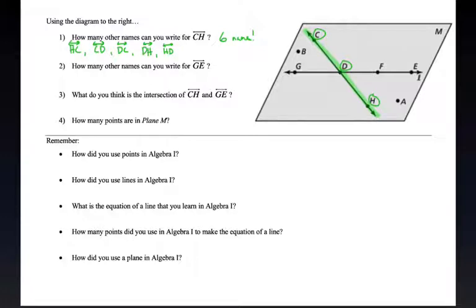Okay, I'm also not going to walk you through this. I want you to just try to remember, come up with how did you use points? So where were points in Algebra 1? Where were lines in Algebra 1? Go ahead and answer these questions as best you can. Don't stress over these, but just see what you can come up with. See what you can remember. Remember, what is the equation of the line that you learned in Algebra 1? There's actually three of them. How many points did you use in Algebra 1 to make the equation of the line? And then how did you use a plane? Did you remember using a plane in Algebra 1?